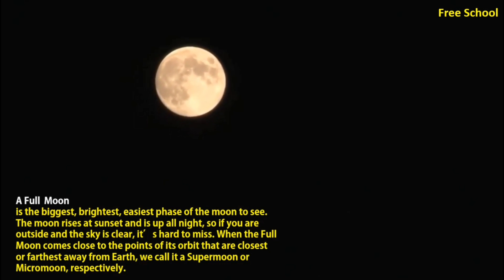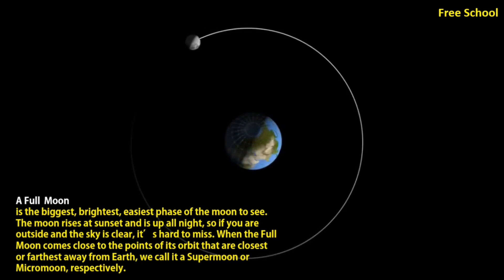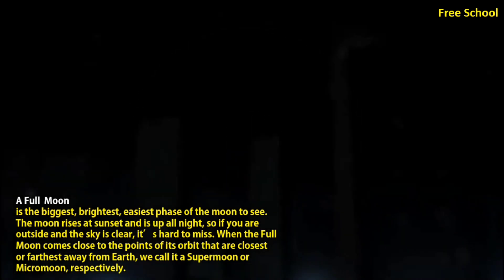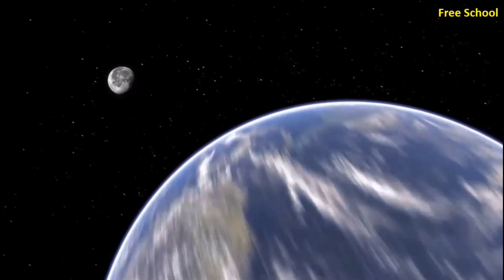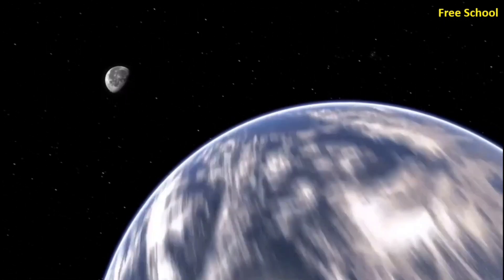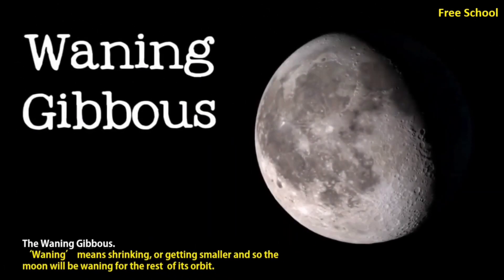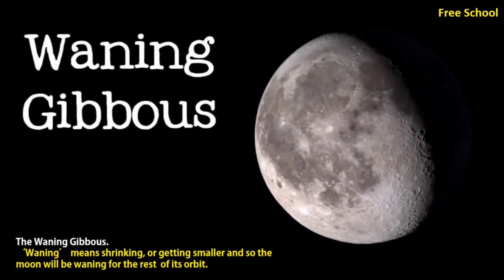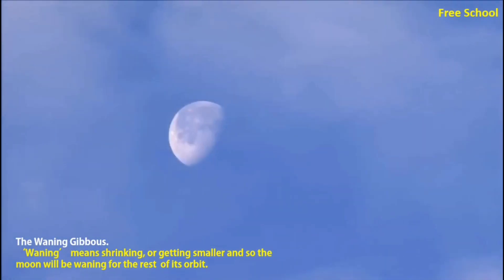When the full moon comes close to the points of its orbit that are closest or farthest away from Earth, we call it a super moon or micro moon respectively. A few days after the full moon, the moon will be gibbous again, but this time it's waning gibbous. Waning means shrinking or getting smaller, and the moon will be waning for the rest of its orbit.